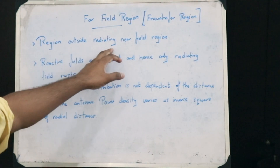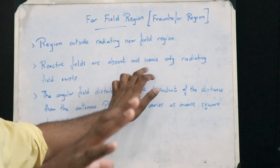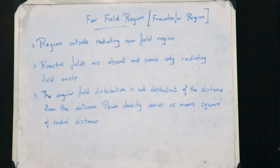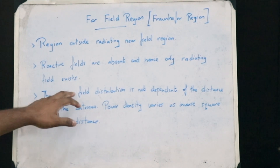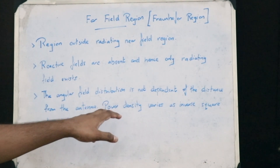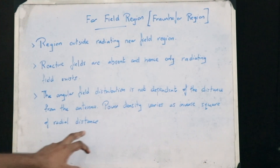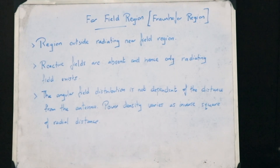It is a region outside the radiating near field region. Here the reactive fields are completely absent and hence only radiating fields are present. The angular field distribution is not at all dependent on the distance from the antenna, and therefore the power density varies as an inverse square with the radial distance. This sums up the various antenna field zones that a particular dipole antenna has. Stay tuned for more videos and peace out. Thank you.